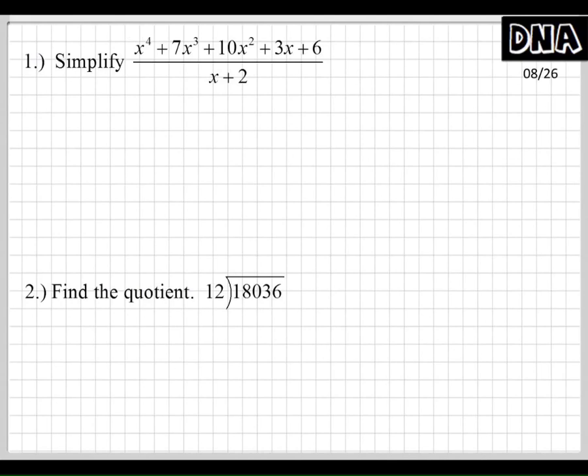And so you can always count the terms to see if they're missing. Or you can do what I like to do, and I like to see if they count down: 4, 3, 2, 1, and then 0. You know, that would be x to the 0. It should always count down like that. And if you're missing a term, make sure you put it in there before you start setting things up.